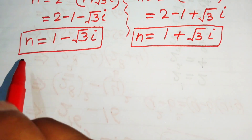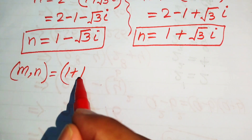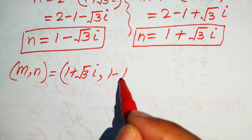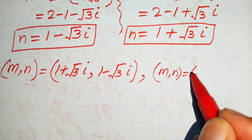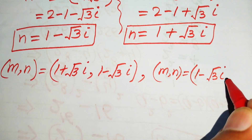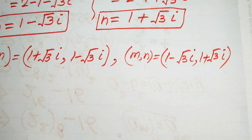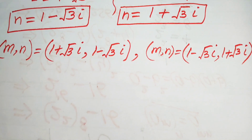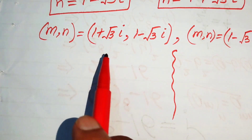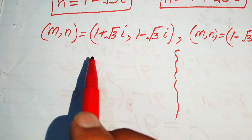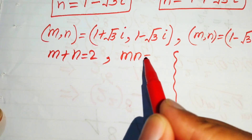Finally we have two solutions of the given equations. The first solution is (m, n) equals (1 plus root 3 iota, 1 minus root 3 iota). The second solution is (m, n) equals (1 minus root 3 iota, 1 plus root 3 iota). Now we verify that both solutions satisfy the original equations. Equation 1 is m plus n equals 2, and equation 2 is mn equals 4.